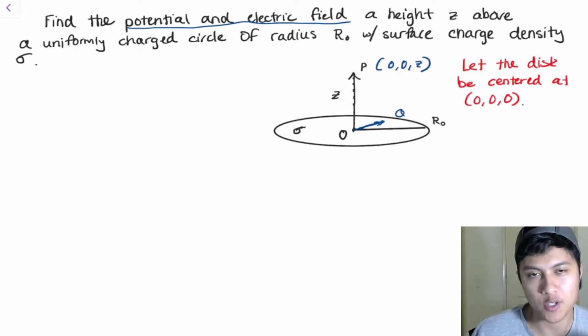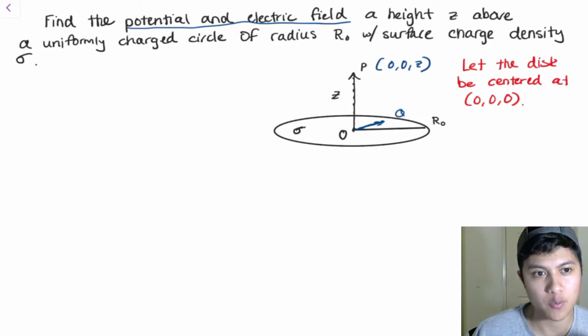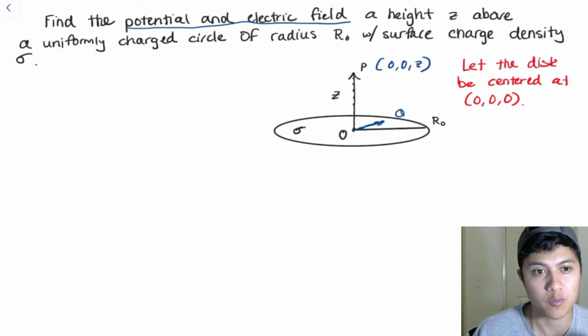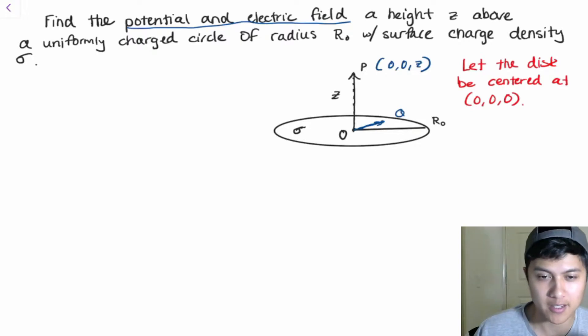Hey there my fellow intellectuals. Today we're going to be going through a problem in electrodynamics. Specifically we're going to find the potential and the electric field a height z above a uniformly charged circle of radius r0.